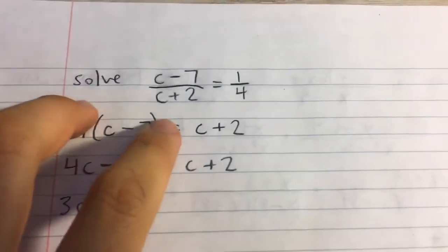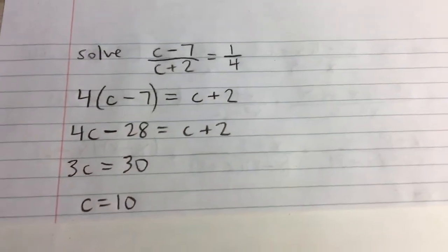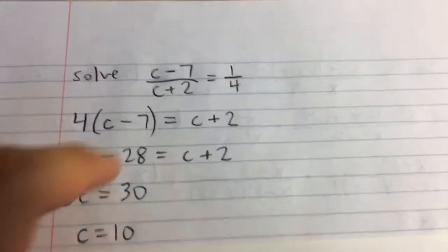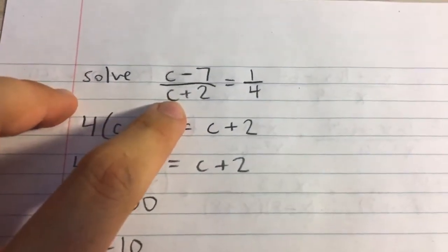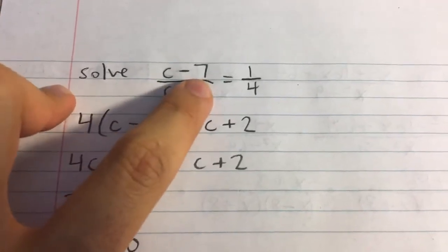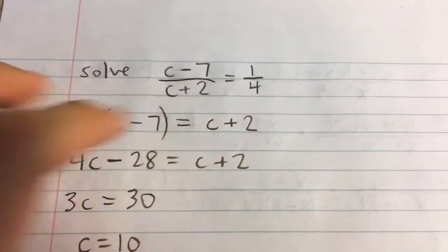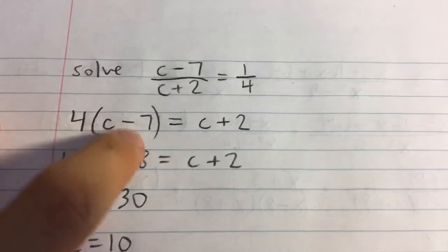In this case, that means we multiply both sides of the equation by both denominators. When we multiply the left side by c plus 2, that cancels the denominator, and multiply by 4. That becomes 4 times c minus 7.